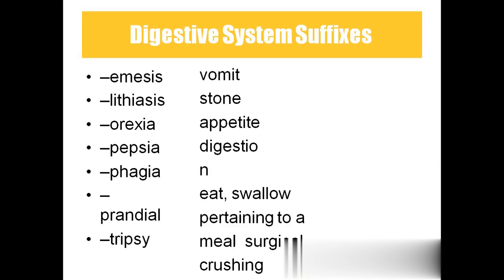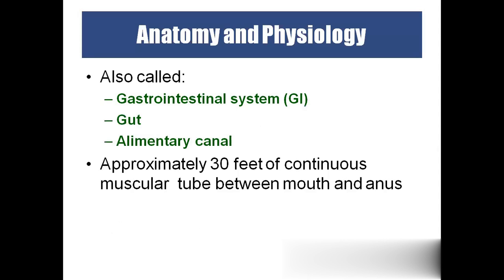Key suffixes: emesis means vomiting, lithiasis means formation of stones (commonly in the gallbladder), orexia means appetite (e.g., anorexia means loss of appetite), pepsia means digestion (the name Pepsi came from pepsia), phasia means eating or swallowing, prandial means meal — post-prandial means after the meal, pre-prandial means before the meal, tripsy means surgical crushing of stones. The digestive system is also called the GIT, gastrointestinal tract.